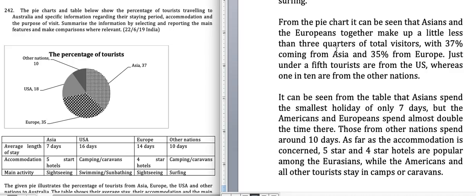Asians and Europeans together make up a little less than three quarters of the total visitors, with 37% coming from Asia and 35% from Europe — that total is 72, so a little less than three quarters. Just under a fifth — since a fifth is 20% and this is 18% — tourists are from the US, whereas 1 in 10 are from the other nations. I've used typical pie chart vocabulary: '1 in 10,' 'just under a fifth,' 'a little less than three quarters,' all in the present tense.